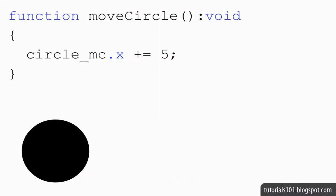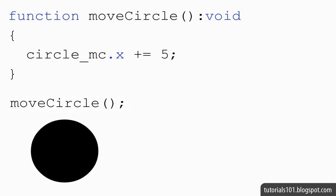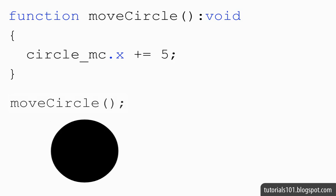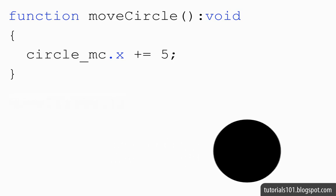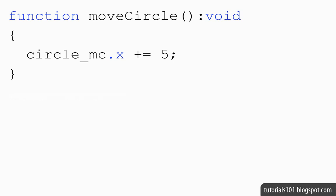Let's first try to understand how we can animate an object using code. I've got a function here called moveCircle, which increases the x position of a movie clip symbol by 5 pixels. So if I call this function, the circle moves to the right. If I call this function again, the circle moves again. If I keep calling the function fast enough, then that's when I get the animated effect. So what we need to do is find a way to call this function repeatedly without having to manually add numerous function calls so that we can animate the object using code.